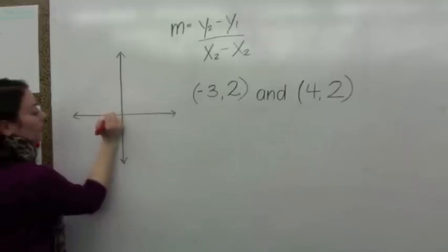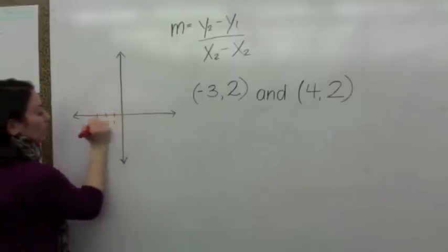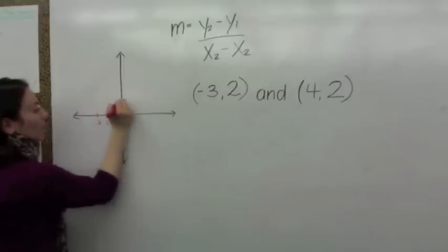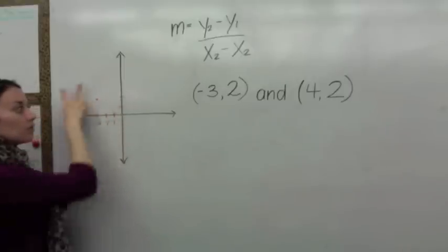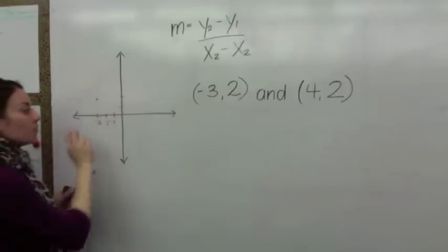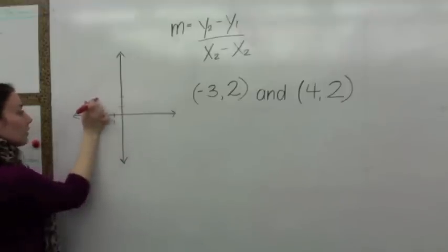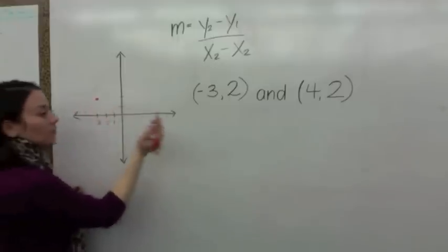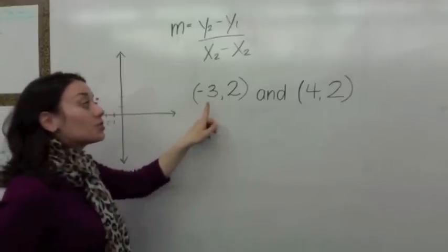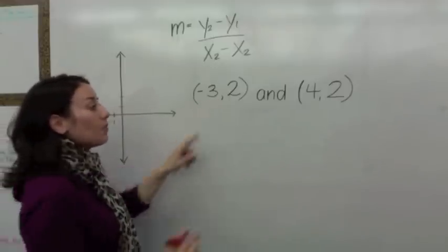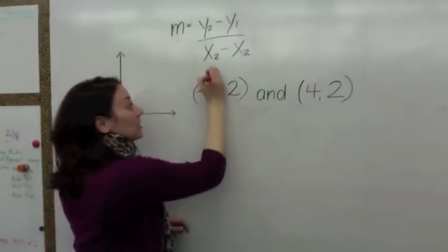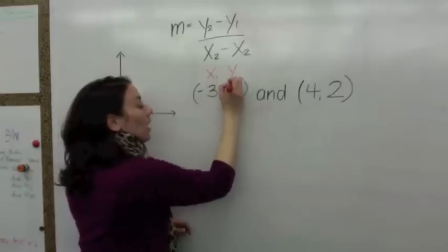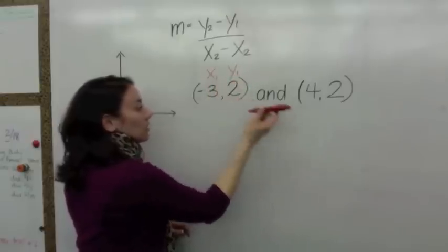Which quadrant is this in? Quadrant 2 — very good. So here's the point. This is the first coordinate point, so remember if you're labeling now, this is x1, y1. Let's look at the second point: positive 4, positive 2.